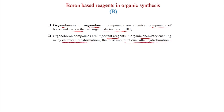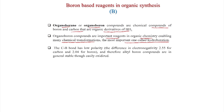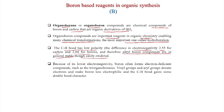The most important reaction is called hydroboration. This is a very useful reaction because the hydroborated products can be converted to other compounds. The C-B bond has low polarity — the difference in electronegativity is 2.55 for carbon and 2.04 for boron — and therefore alkyl boron compounds are in general stable though easily oxidized.